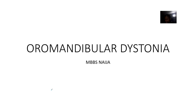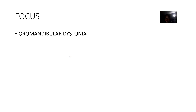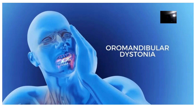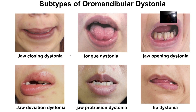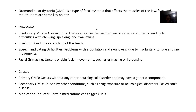We're talking about oromandibular dystonia. Oromandibular dystonia is a type of focal dystonia that affects the muscles of the jaw, face, and mouth.